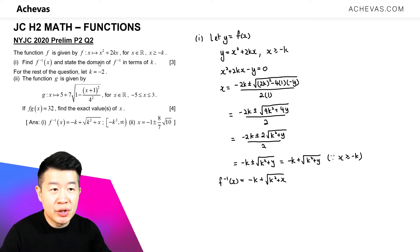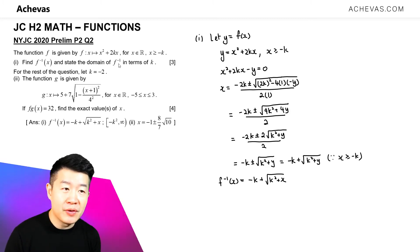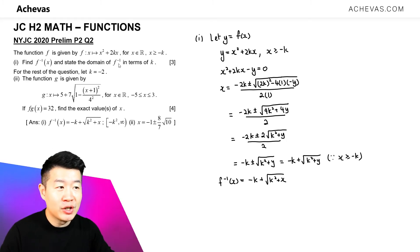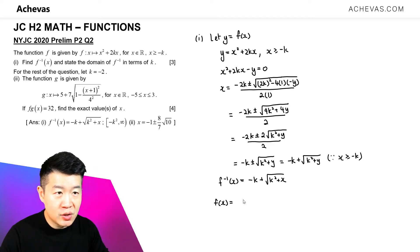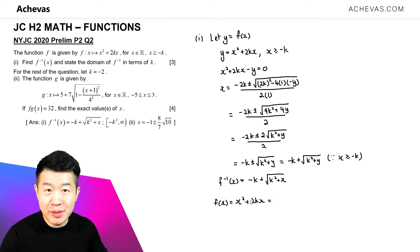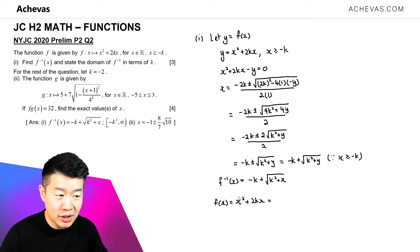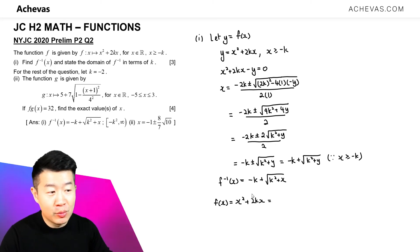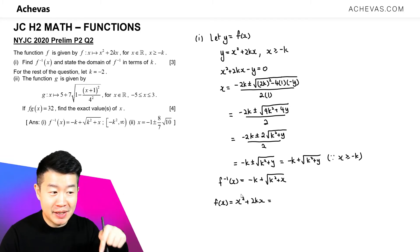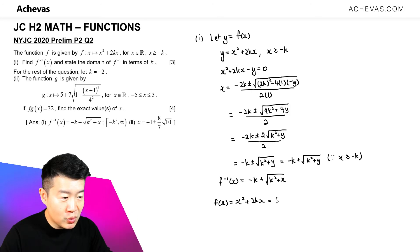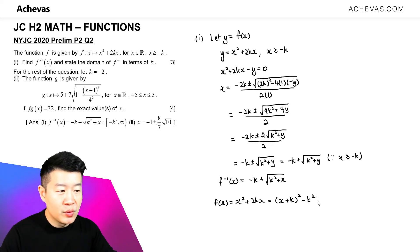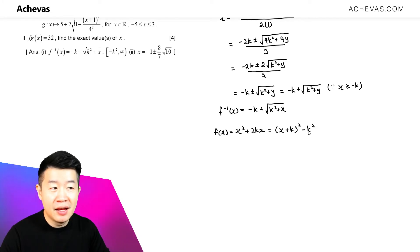The next thing we're going to do is find the domain of f inverse. We know the domain of f inverse is the same as the range of f. So let's find the range of f by working on the expression f(x) = x squared plus 2kx. I'm going to sketch the graph of y = f(x) by completing the square. Since this is a quadratic expression, the graph is a parabola with a minimum point. Completing the square gives us (x + k) squared minus k squared, so the minimum point is at (minus k, minus k squared).